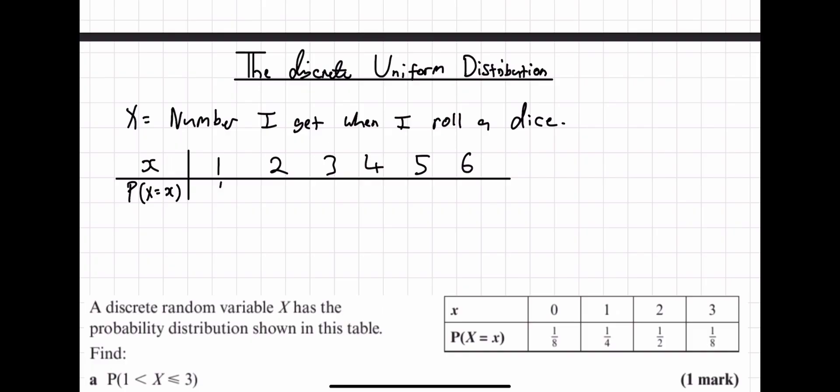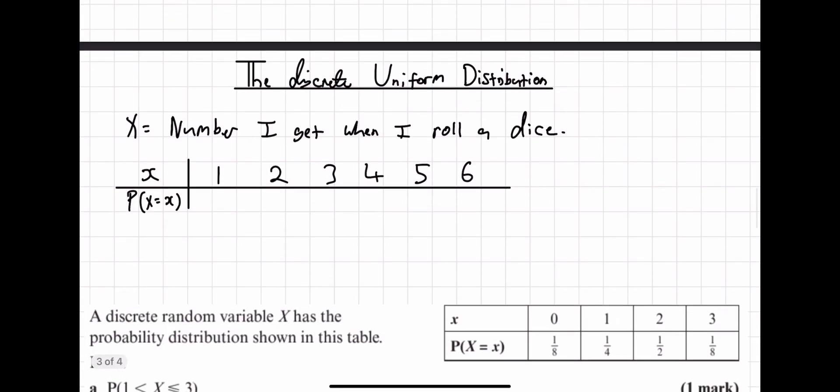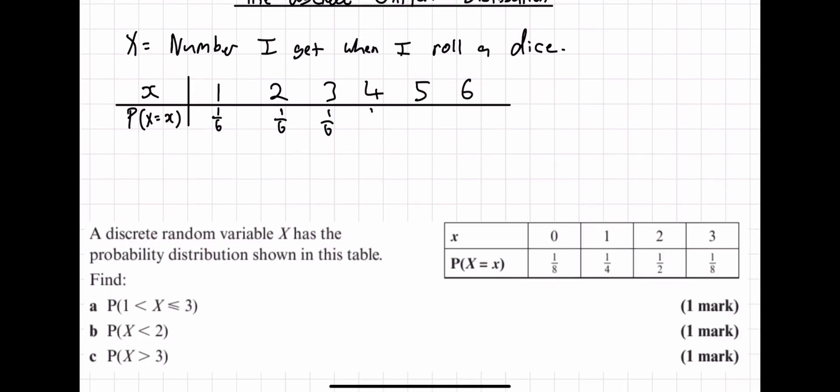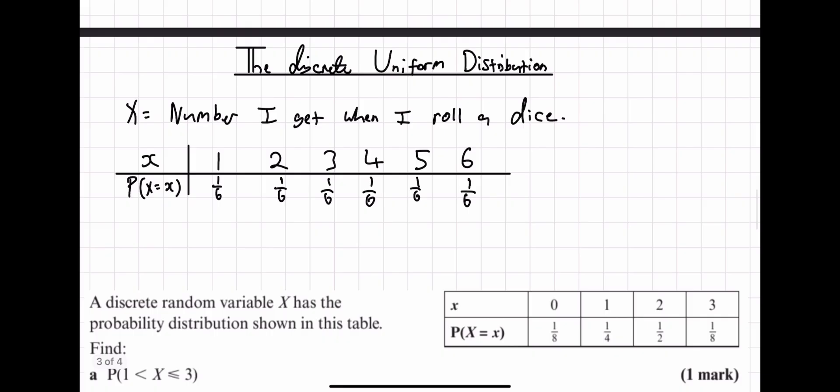The discrete uniform distribution is basically a distribution you can have where all of the outcomes have the same probability. For example, X equals the number I get when I roll a die. And you're assuming that die is fair, so every number has an equal chance of selection. So you would assume that rolling a die would have a discrete uniform distribution. Which means the probability of die landing on one is one-sixth. The probability of a die landing on two is one-sixth, three is one-sixth, four is one-sixth, five is one-sixth, and six is one-sixth. This is a discrete uniform distribution because all of the possible outcomes have the same probability of success.